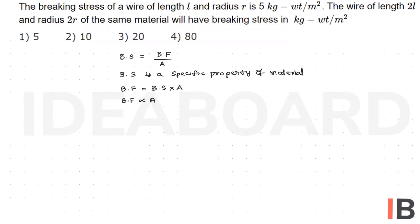For the same material wire, the breaking stress is always the same. That's why the first option is correct. In this case, the breaking stress equals 5 kg-wt/m².